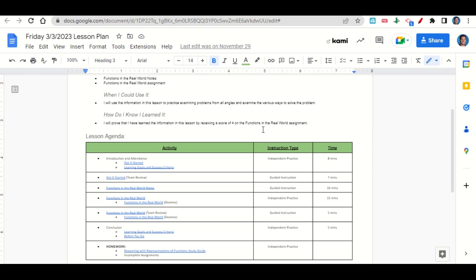After that, we'll go over the functions in the real world notes and then I'll give you time to complete the functions in the real world assignment on Desmos. Once you've completed the assignment, we'll go over it together and answer any questions. At the end of class, we'll go back over our learning goals and success criteria while you fill out your before you go. Your only homework for tonight is to continue working on the reasoning with representations of functions study guide and any incomplete assignments.